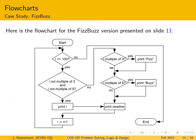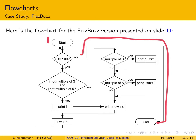Here is the flowchart for FizzBuzz as presented earlier in the three-question version. We have the start symbol right here, and then we check whether I is less than or equal to 100. If it is not — meaning we have exhausted the loop — then execution stops and we end up at the end symbol. If we are still in the loop, we ask the first question: if I is not a multiple of three and I is not a multiple of five, then we print I and a new line, then increment I and go back to the beginning.